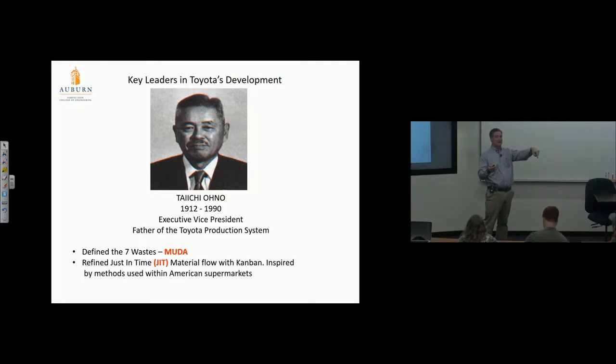In an American supermarket you have pull production—customers take whatever they want, shelves are replenished, no massive inventories. Why were American supermarkets so smart to set up a pull system prior to Toyota? Food spoils, so it's necessity that you do that.